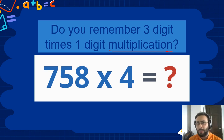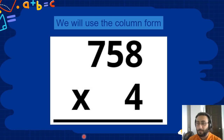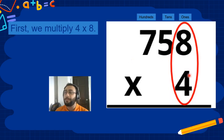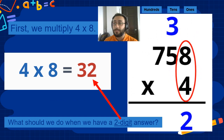So how do we do it? We can do it in our head or we can do it in the column form. Column form is very easy. So let's start. We always start from the first digit which is in the ones. So we multiply 4 times 8. 4 times 8 is 32.